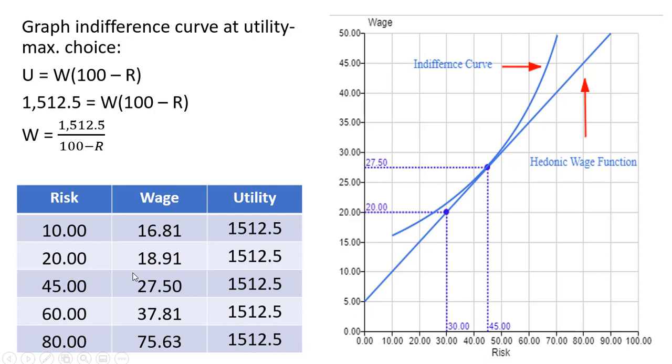Here's where 10 and 16.81 is, here's where 20 and 18.91 is, here's where 45 and 27.50 is. When R is 60, wage is 37.81. And finally, if there's a government regulation that mandates a maximum risk of 30, this point would fall on a lower indifference curve for this worker, meaning they would get less utility.